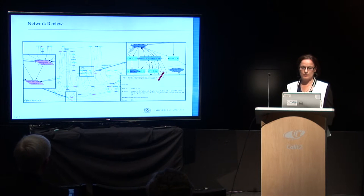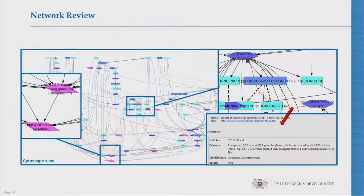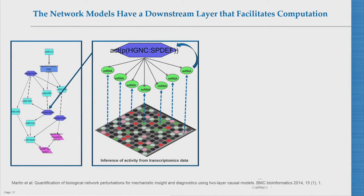We build these models to interpret transcriptomic data from our studies in a specific biological context, so the models need to be scorable with transcriptomics data. Therefore, the models always have two layers. Some nodes — the backbone nodes — have information underneath about messenger RNAs that the node regulates, captured from literature or extracted from datasets. This allows you to infer the activity of a node from transcriptomic data and gene expression changes.